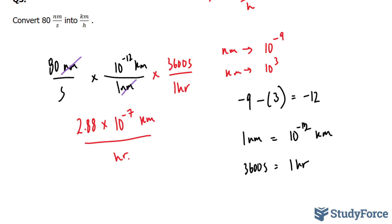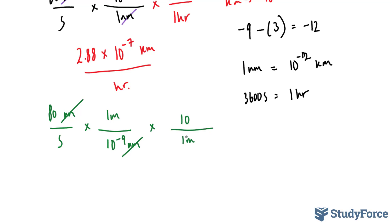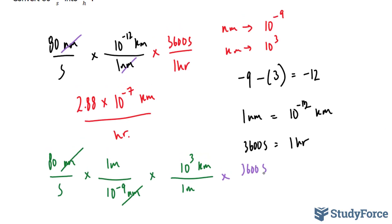Keep in mind that another way to do this is to take 80 nanometers over seconds and multiply by 1 meter over 10 to the power of negative 9 nanometers — canceling nanometers — then multiply by 10 to the power of 3 kilometers over 1 meter, and finally by 3,600 seconds over 1 hour to cancel the seconds. Either method gives you the same answer — it is strictly up to you which one to use.